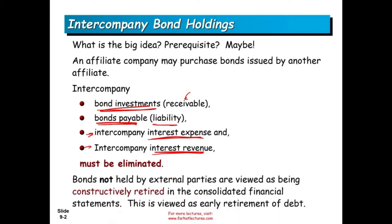Bonds not held by external parties are viewed as being constructively retired. Although the issuing company did not buy them, since our affiliate bought them, it's as if we bought them — they are constructively retired. This is viewed as an early retirement of debt. It's a good idea to go back to my intermediate accounting chapter 14 if you don't know how to retire debt. I'm going to cover how to retire debt here, but it's a little bit different from having only one company.